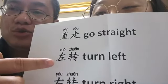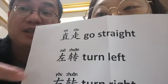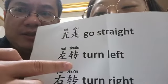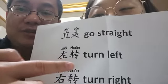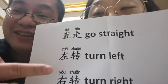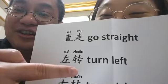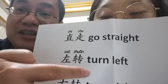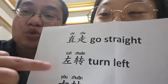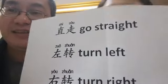So Abby, 左 means? Left — the direction of left. And 转 means turn. So in Chinese we say 左转 — left, turn. But in English we say turn left. 左转.